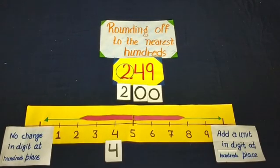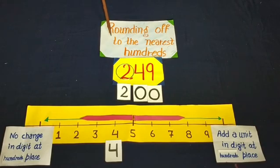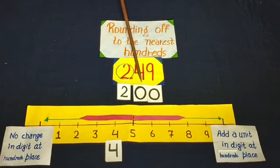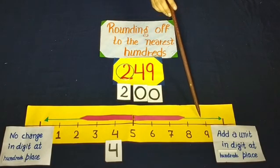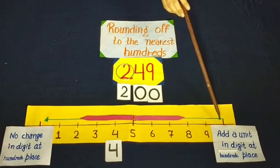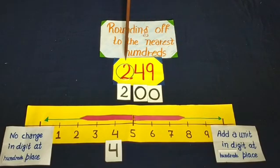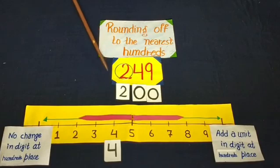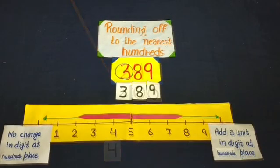Students, rounding in a simple way: if you want to round to hundreds, put two zeros on the right. If the tens digit is 5 to 9, add a unit to hundreds with an arrow. But if it is 4 or less, there is no change.